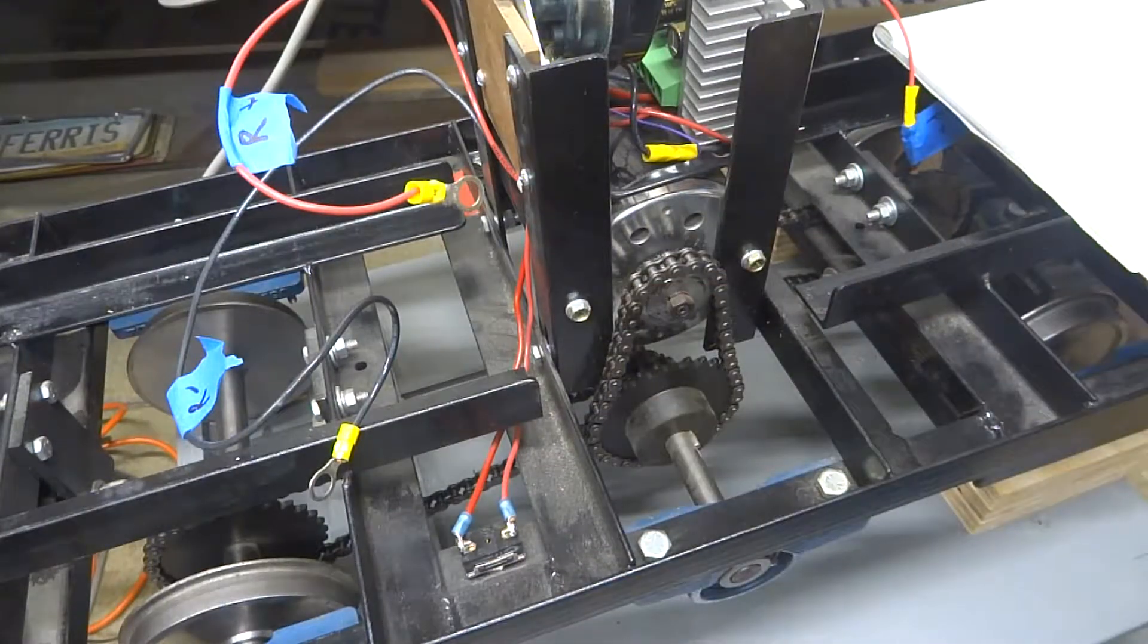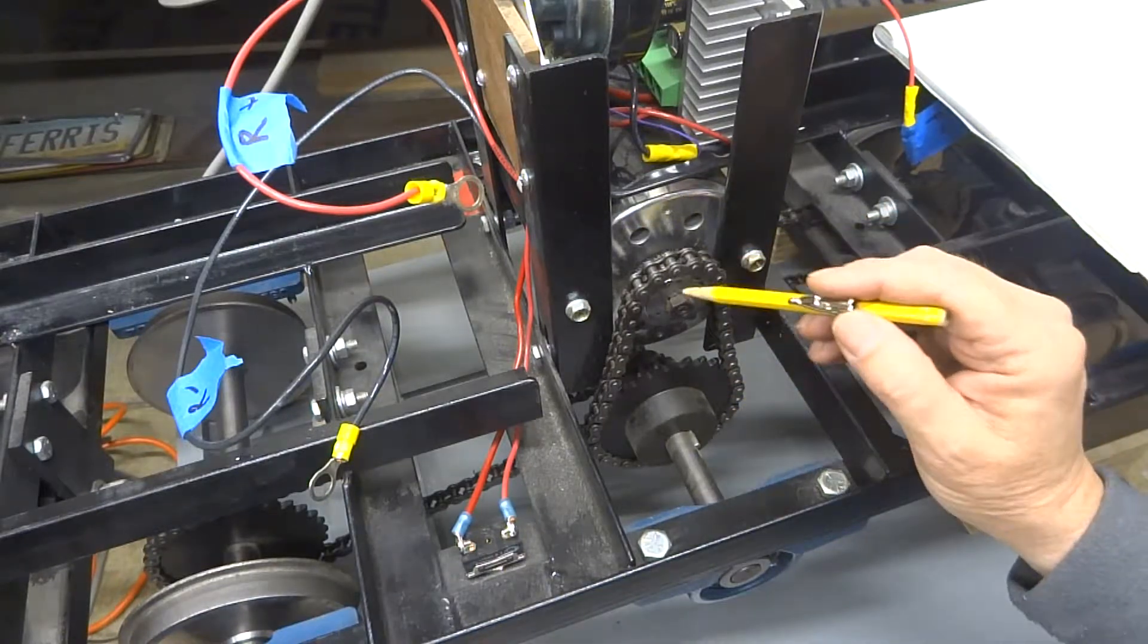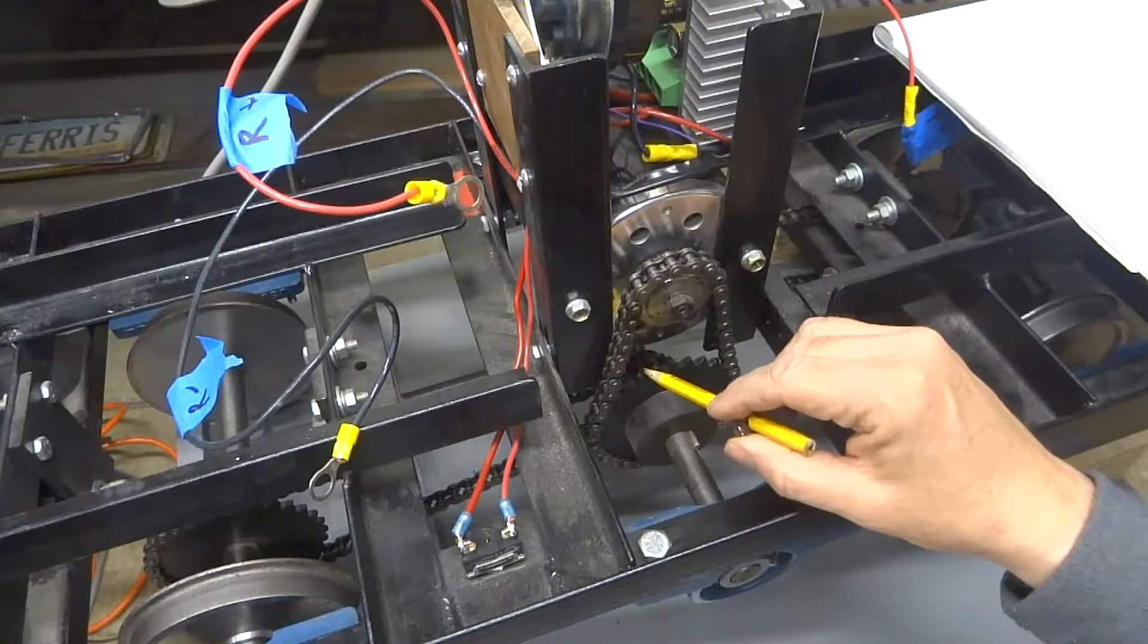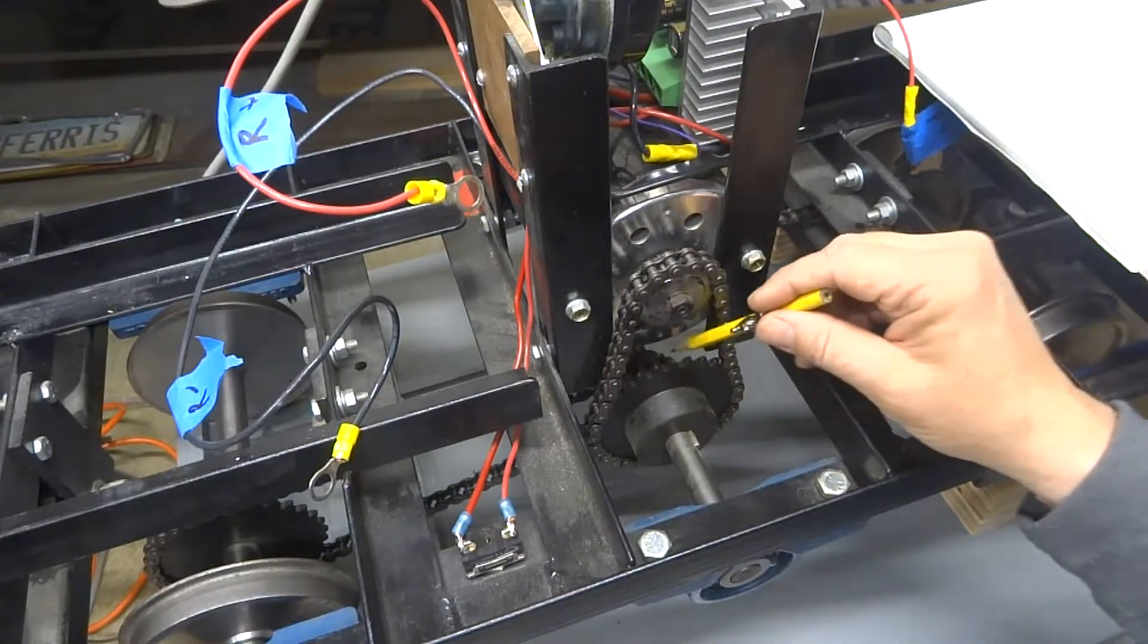This 15-tooth goes up to 30 teeth here, and that gives us a 1 to 2 ratio. Then just behind this big sprocket, down in here, is another small sprocket that has 11 teeth on it.